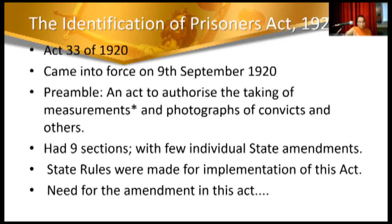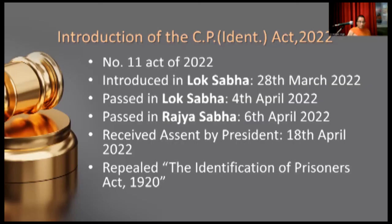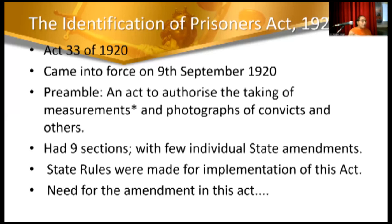That act enacted in 1920 had nine sections, and over 102 years various state amendments came into being, along with state rules for enforcement, since the power to make rules was given to the states. After 102 years, amendments were needed because techniques had evolved, criminals had evolved, and the techniques of committing crimes had evolved, so counter-forensics had to evolve too.